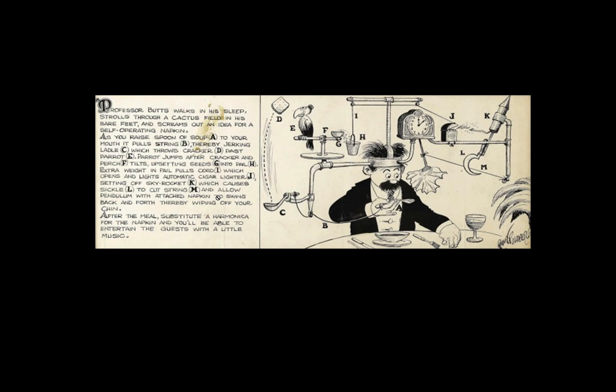Hello, readers. Once upon a time in the previous century, there lived a cartoonist and engineer named Rube Goldberg, who became well known for his drawings of wacky, overcomplicated machines. This is one such machine, the self-operating napkin.